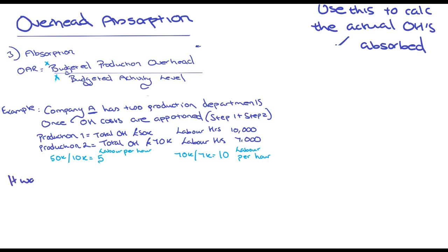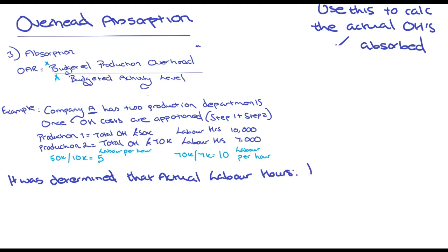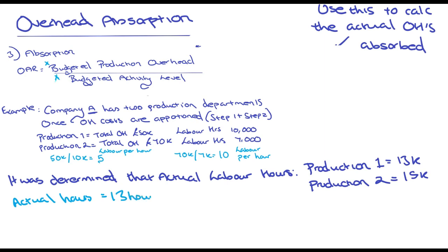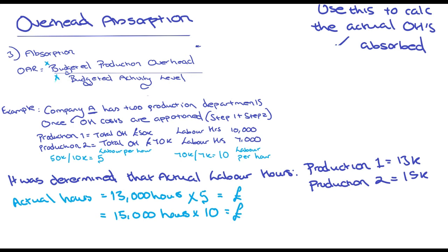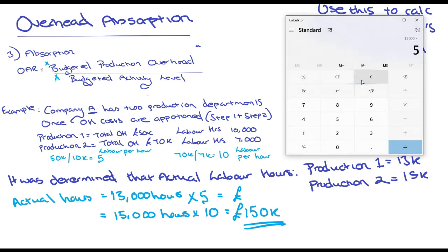Now it was determined that the actual labour hours were: Production one had 13,000 labour hours, and Production two had 15,000. So if we take the actual labour hours of 13,000 and multiply by £5, and for the other one we do 15,000 hours times by £10, we get the actual absorbed costs. That's going to be 65k for production one and 150k for production two.